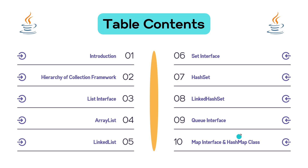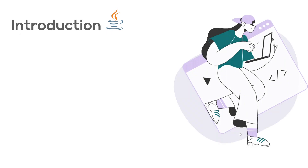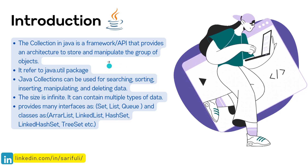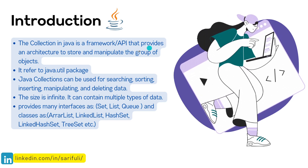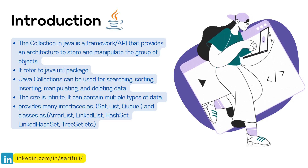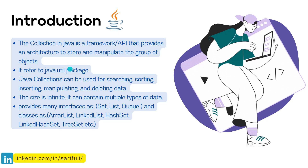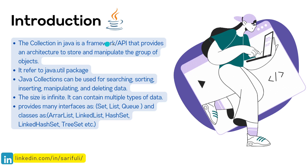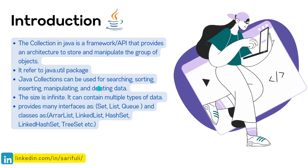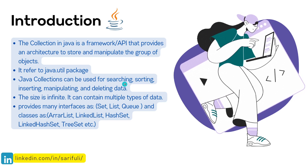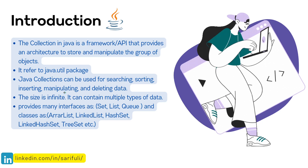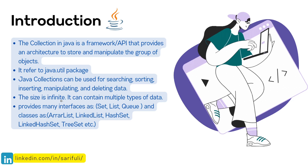Next, let's see what is the Java Collection Framework. The Collection in Java is a framework, or you can say an API, that provides an architecture to store or manipulate the group of objects. It refers to the java.util package — in this package that comes with the Java library you will find all the Java Collection Framework ingredients, all the elements and everything.